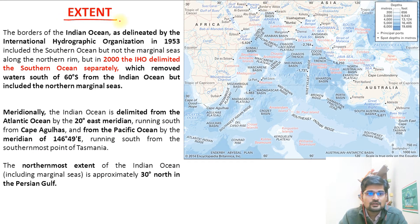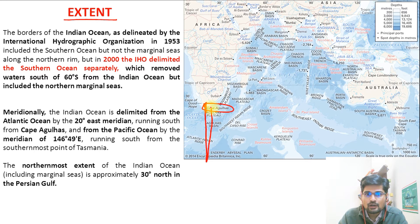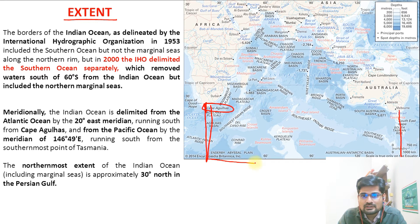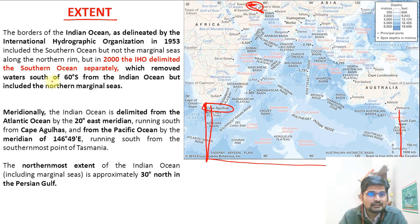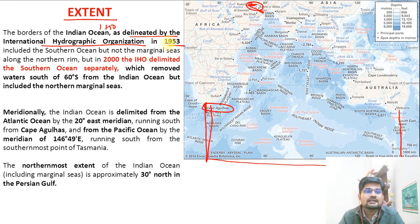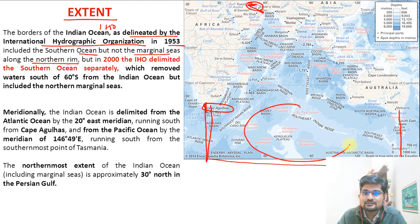In terms of extent, from Cape Agulhas to the Tasmania portion, this is the longitudinal extent of the Indian Ocean. It can extend up to the Persian Gulf in the north — that is the farthest northern point. The borders as delineated by the International Hydrographic Organization (IHO): in 1953, IHO included the Southern Ocean but not the marginal seas along the northern rim. In the early 2000s, IHO delimited the Southern Ocean separately, removing waters south of 60 degrees south from the Indian Ocean.